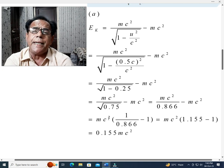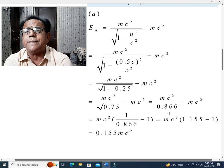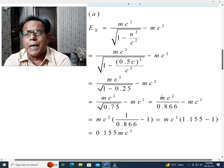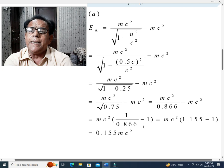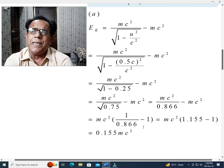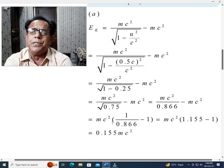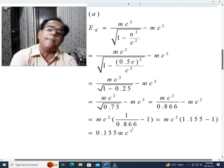So, this step will take the form as mc squared over square root of 0.75 minus mc squared. We know that when we take square root of 0.75, then it becomes equal to 0.866. So, this step will be transformed into mc squared over 0.866 minus mc squared. And next, we have taken mc squared common from these two values.